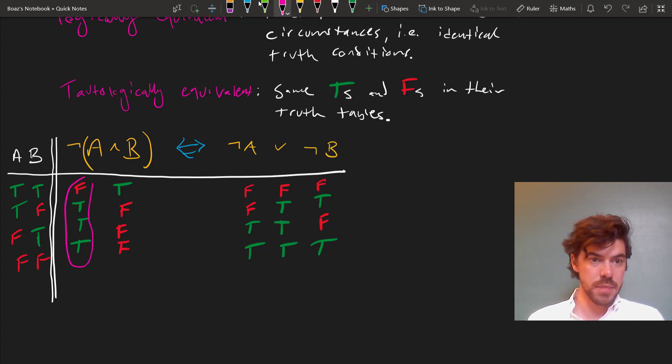And there you have it. The column under the main connective for the left-hand side and the column under the main connective for the right-hand side have identical patterns and are therefore tautologically equivalent.